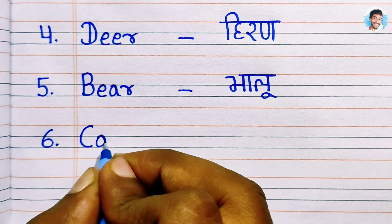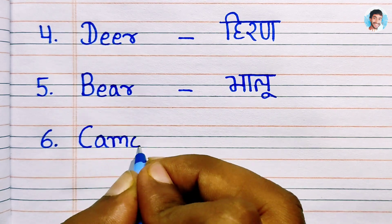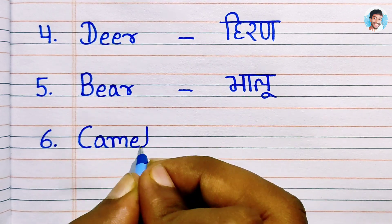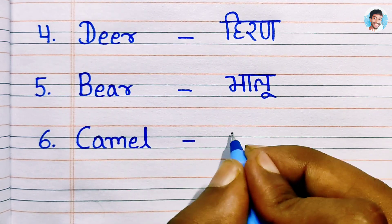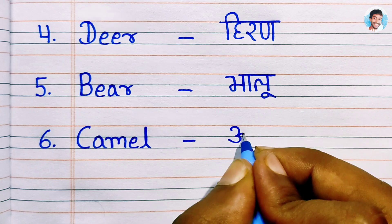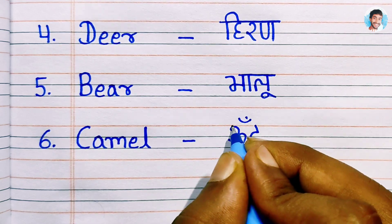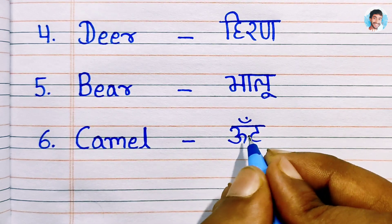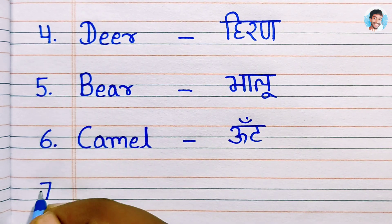Number 6: Camel. C.A.M.E.L. Camel means oont.